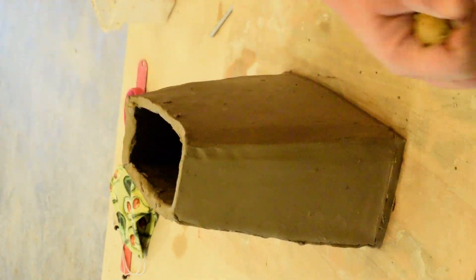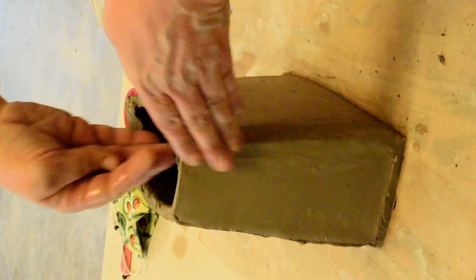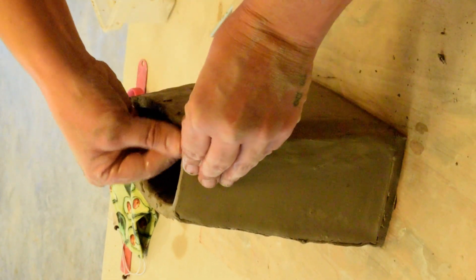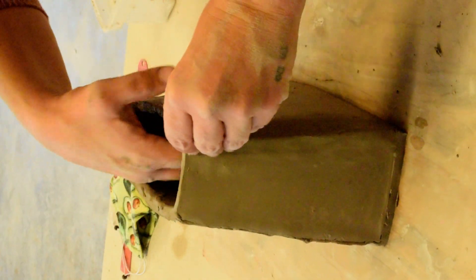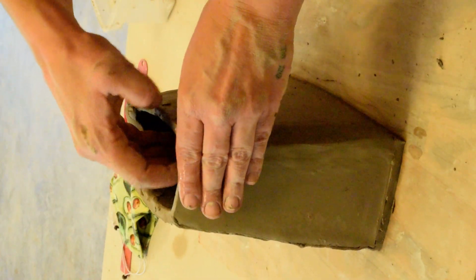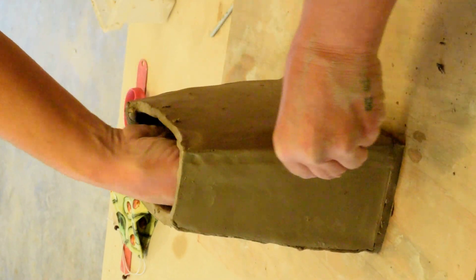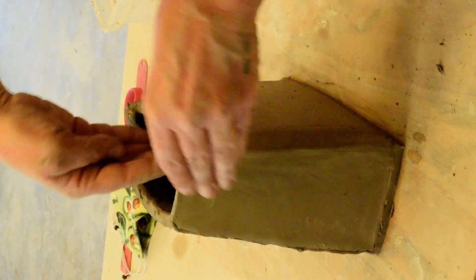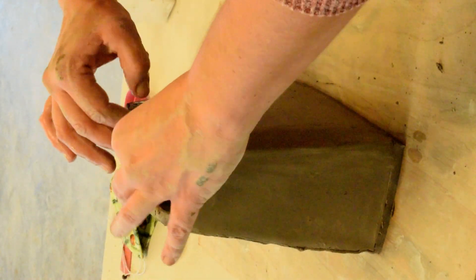Again, a little bit of water at this point might be helpful so that you can smooth off some of those marks on the interior. But you do not want to add a lot of water. You'll compromise the structural integrity of the clay.